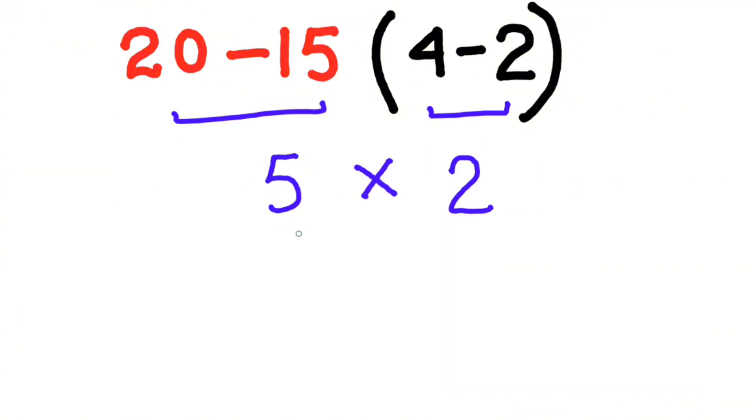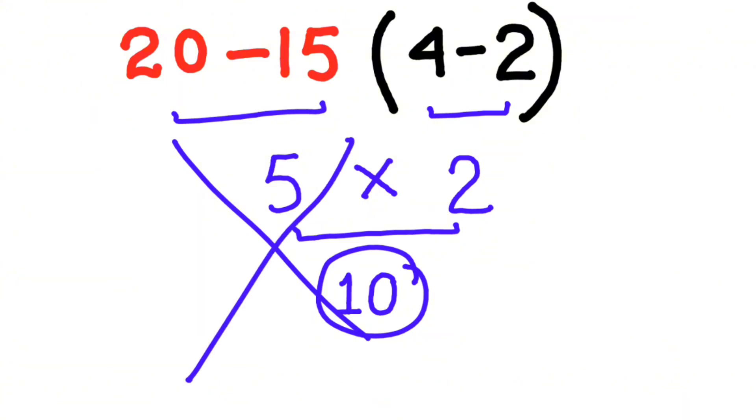Here there's no sign, so we have to put multiplication. 5 times 2 equals 10, so 10 will be our answer. But remember, this is not correct.